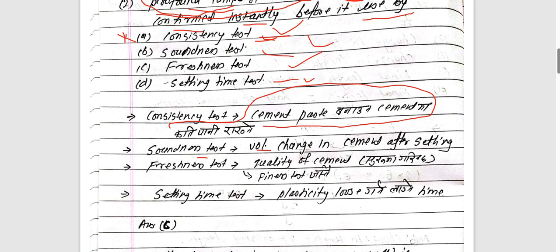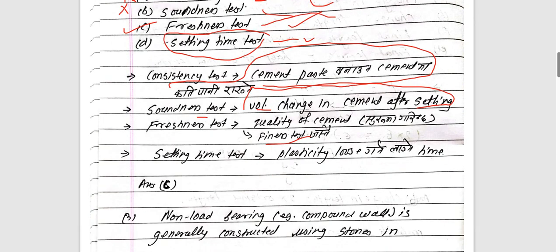There is a lot of change in cement after setting, so the soundness test is important. We need to do the quality test, freshness or fineness test, and the finest test. This is a setting time test — we need to determine plasticity loss time. The answer is option C.